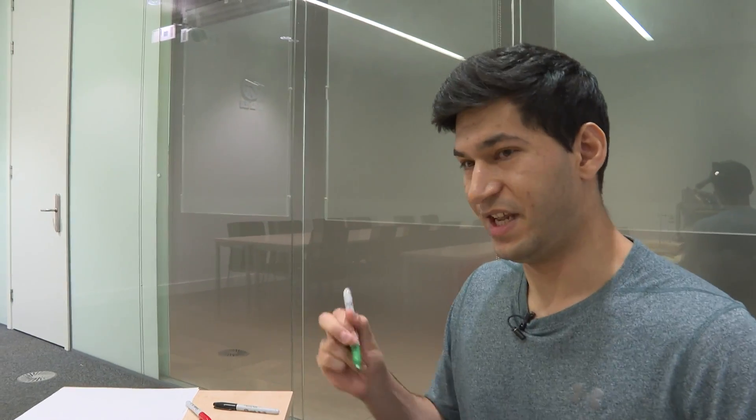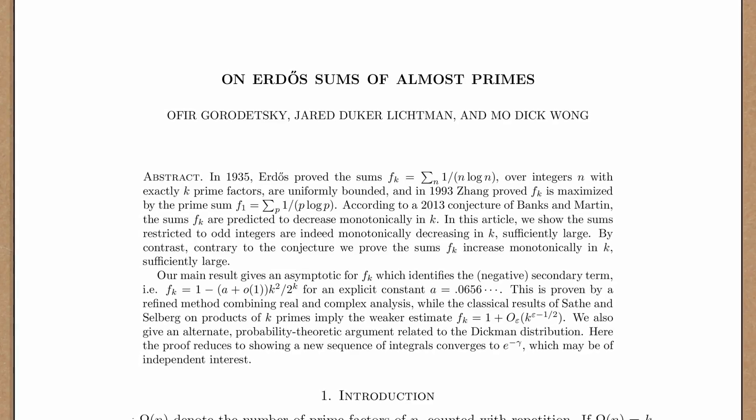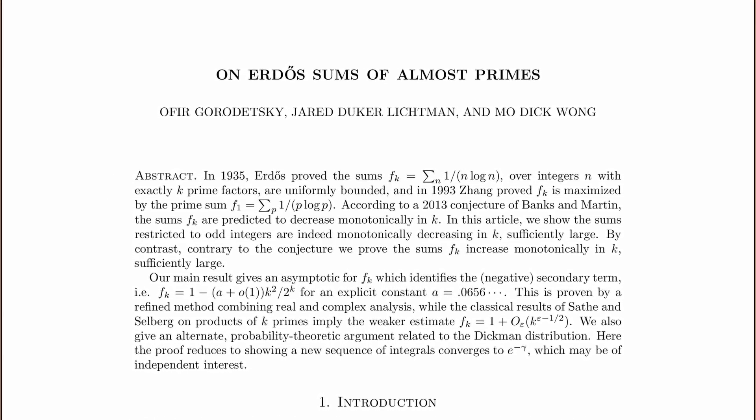This is really kind of an important testing ground to see if we have a good understanding, and in the most general setting of the Banks-Martin conjecture, really says something important about the structure of primitive sets. So today, as a status update, we have some math news that in collaboration with my co-authors, Ophir Gorodetsky and Modic Wang, we were able to prove the odd version of the conjecture holds eventually.